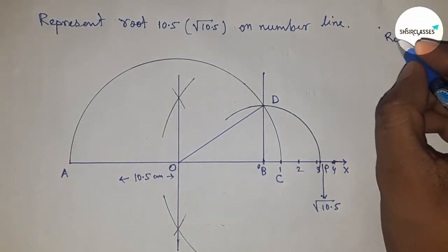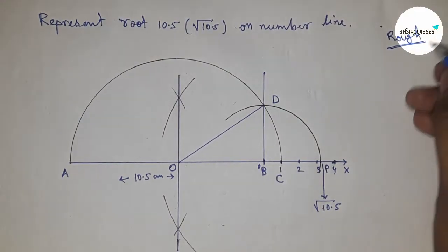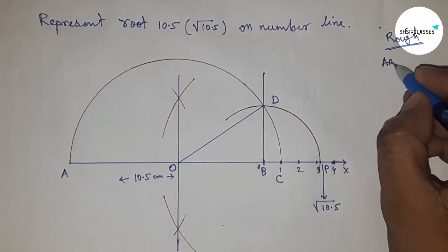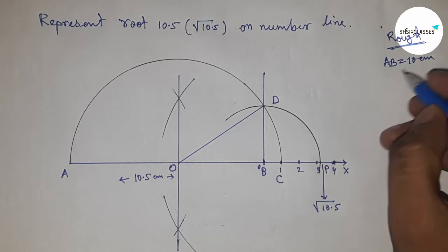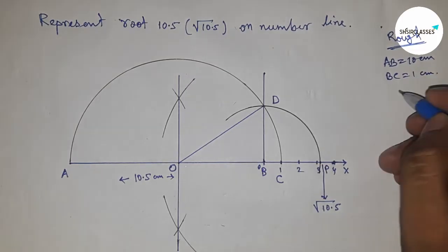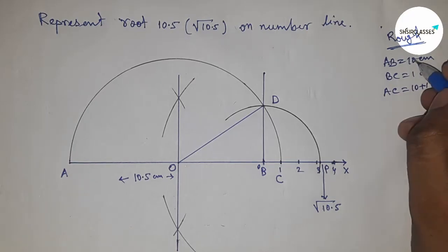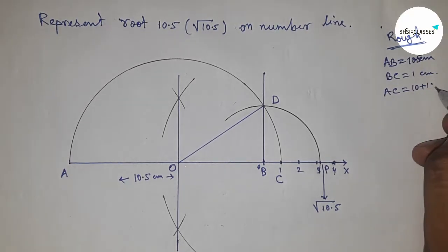Now let's discuss the calculation of root 10.5. AB equals the given 10.5 centimeters and BC equals 1 centimeter. So AC equals 10.5 plus 1.